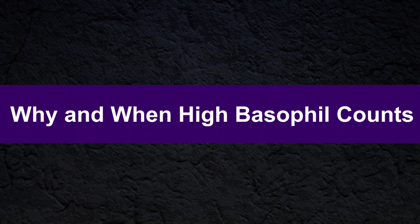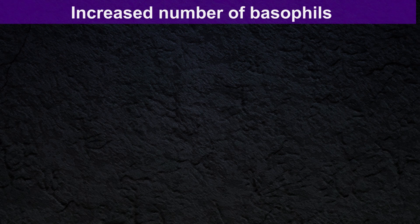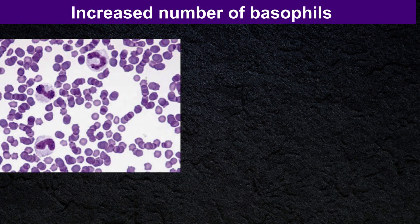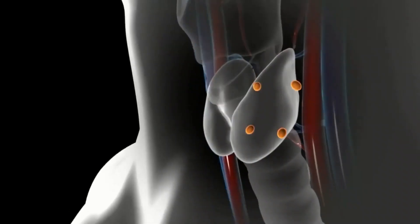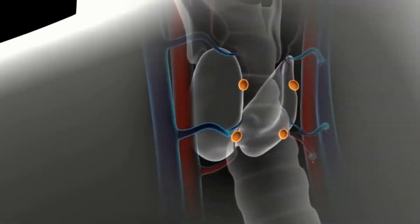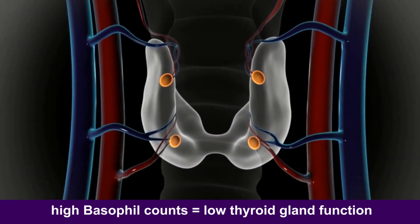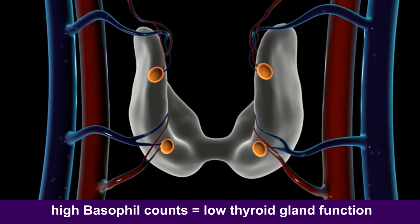When the basophil count is increased, the increased number of basophils in the blood is called basophilia. Myeloproliferative neoplasms and chronic myelogenous leukemia can give a high basophil count. A high basophil count may also be a sign of low thyroid gland function.